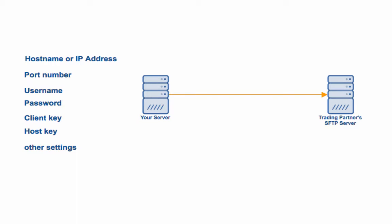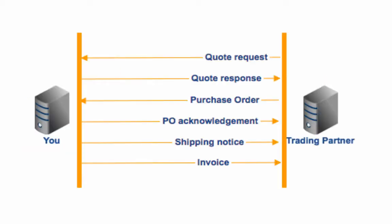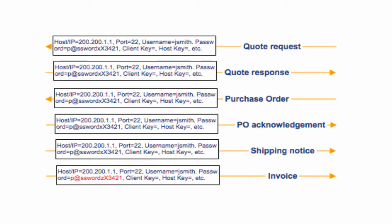That won't be a problem if you only perform one type of transaction with your trading partner. However, in real-world scenarios, two trading partners will most likely need to engage in several business processes. For instance, you might need an SFTP file transfer for transmitting a quote request, another for a quote response, another for a purchase order, yet another for a PO acknowledgement, and so on. Even if all these transactions require the same set of SFTP connection credentials, you'll still need to enter these credentials every time you try to automate a particular transaction. That's when the problems begin.